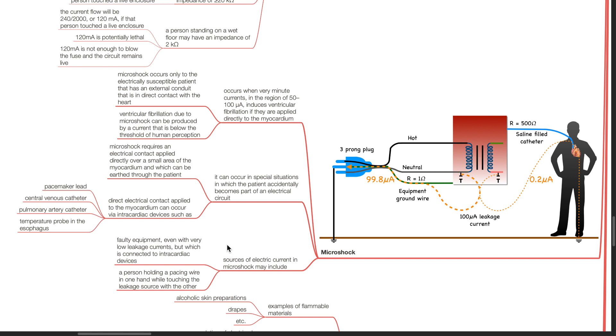Direct electrical contact applied to the myocardium can occur via intracardiac devices such as pacemaker lead, central venous catheter, pulmonary artery catheter, and temperature probe in the esophagus. Sources of electric current in microshock may include faulty equipment even with very low leakage currents but which is connected to intracardiac devices, or a person holding a pacing wire in one hand while touching the leakage source with the other.